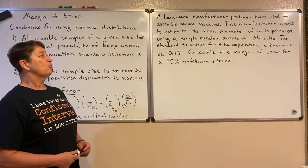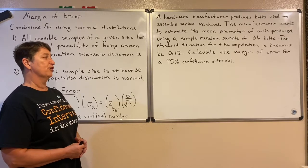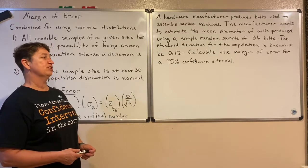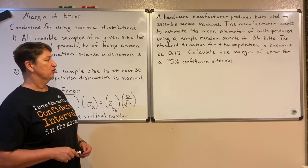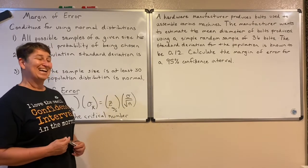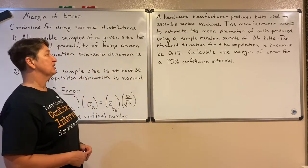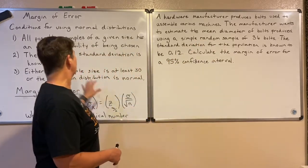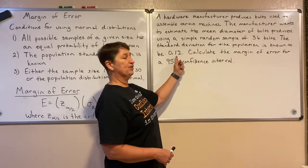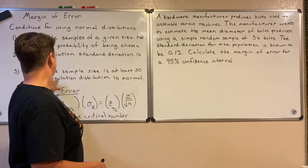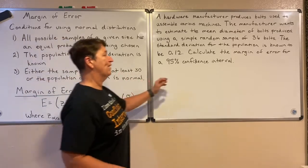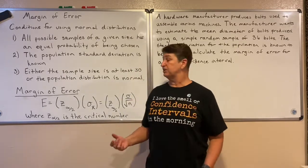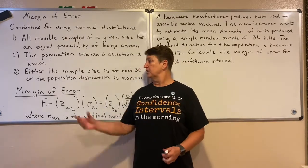A hardware manufacturer produces bolts and wants to estimate the mean diameter using a simple random sample of 36 bolts. The population standard deviation is known to be 12 hundredths. Calculate the margin of error for a 95% confidence interval. Checking the three conditions: simple random sample — check; population standard deviation of 12 hundredths is known — check; sample size of 36 is at least 30 — check. So we can use the normal distribution.